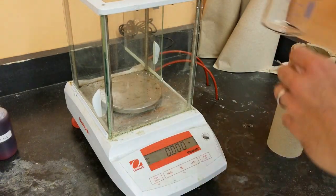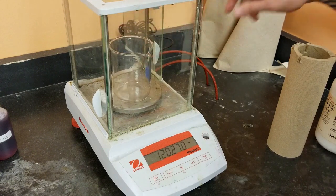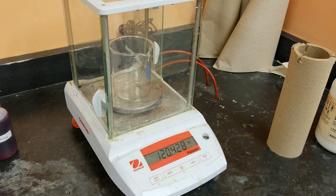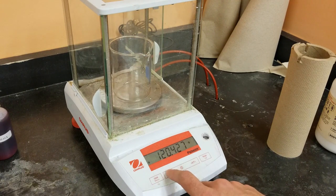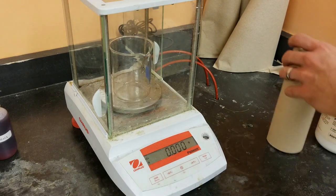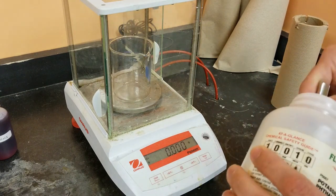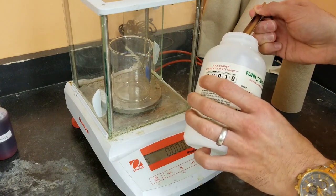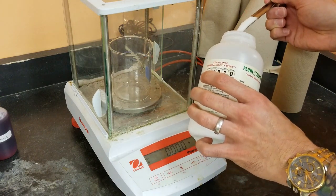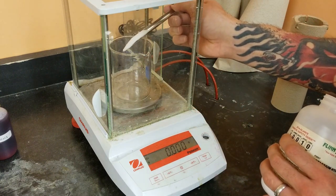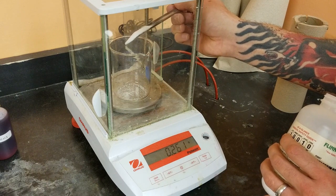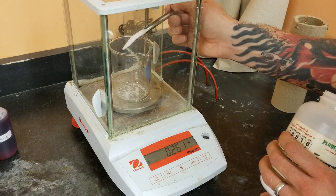I want to weigh out approximately 0.45 grams. It's all right if I'm going to be a little bit over. I'm going to zero out the balance. Now, one typical source of error when you're using KHP is that it is hygroscopic and so it absorbs moisture. So I'm trying to do this quickly.